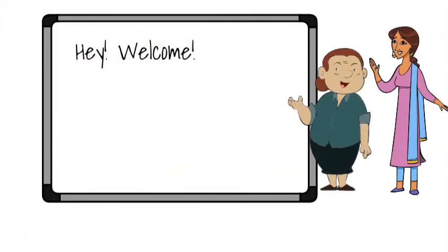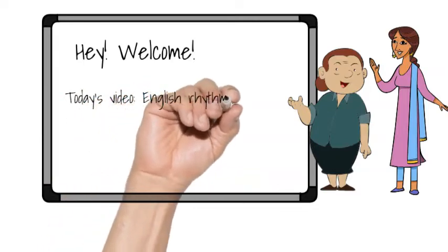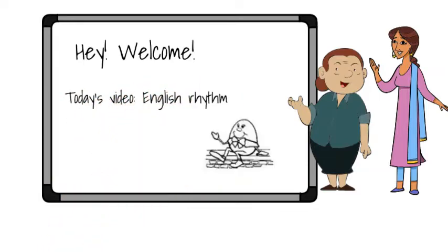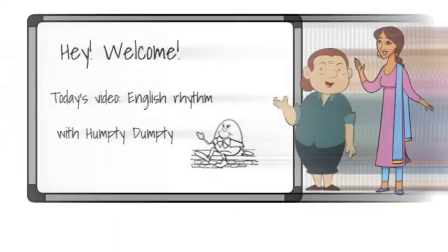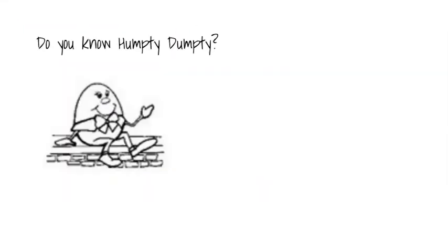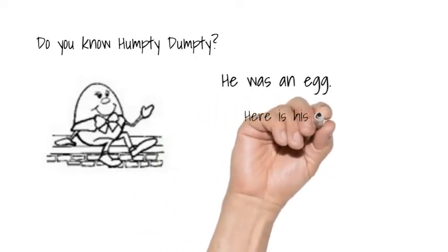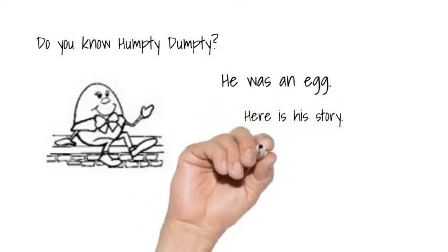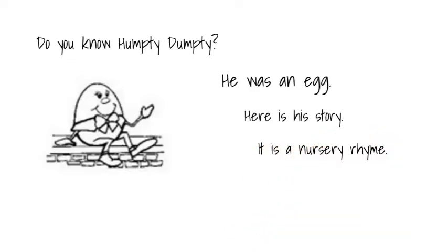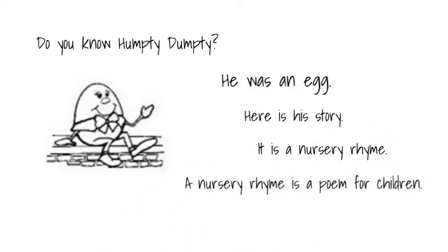Hey, welcome. Today's video: English Rhythm with Humpty Dumpty. Do you know Humpty Dumpty? He was an egg. Here is his story. It is a nursery rhyme. A nursery rhyme is a poem for children. Let's begin.